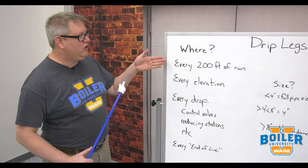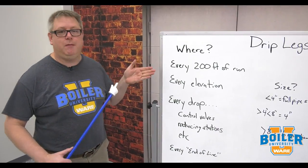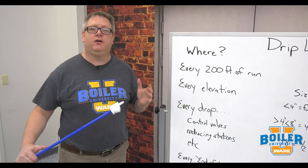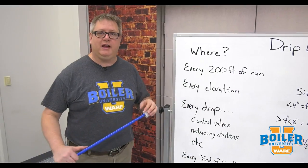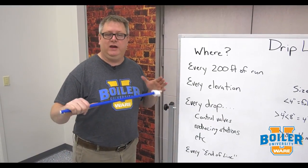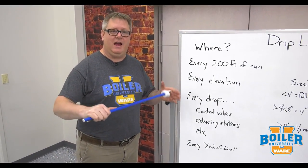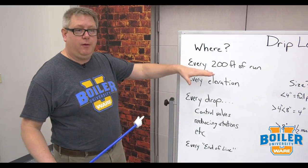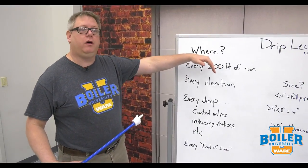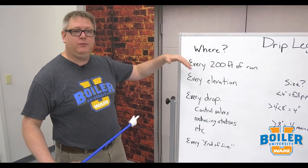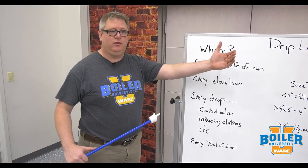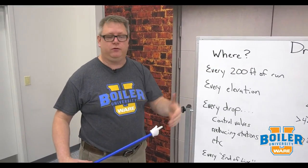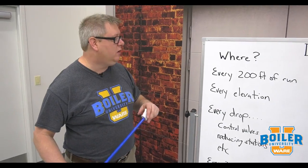First, every 200 feet of steam main run we want a drip leg, because we're generating condensate in that run and we need to get rid of it at intervals. This is a rule of thumb — you can get away with a little bit longer sometimes, but if you cross outside through a breezeway you may need to make it shorter because there's more condensate being generated.